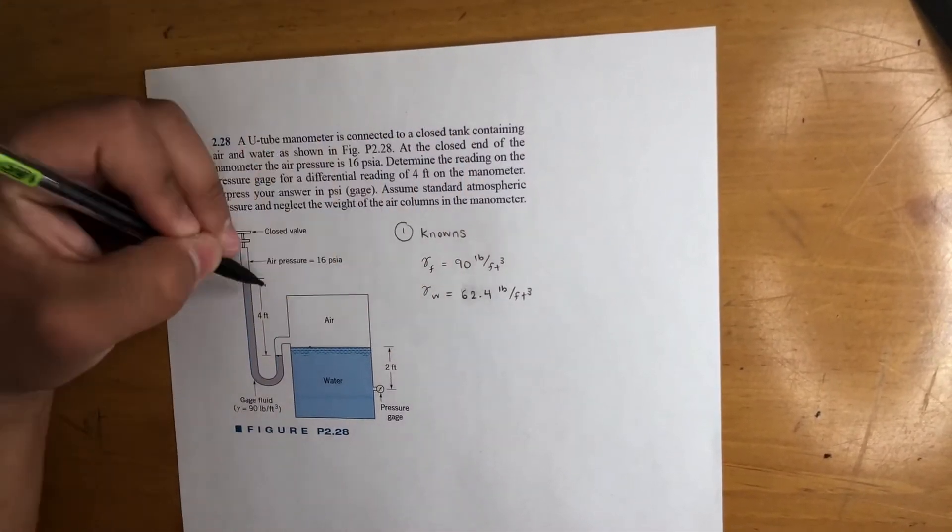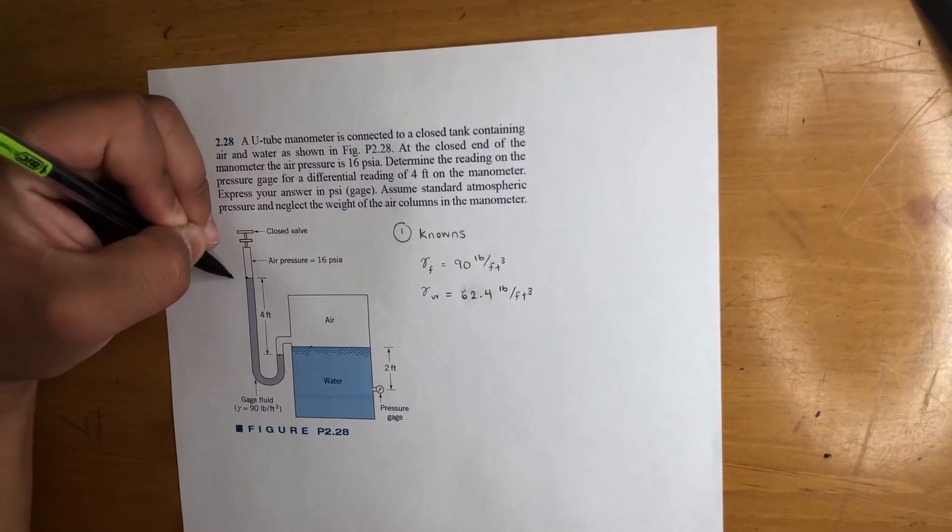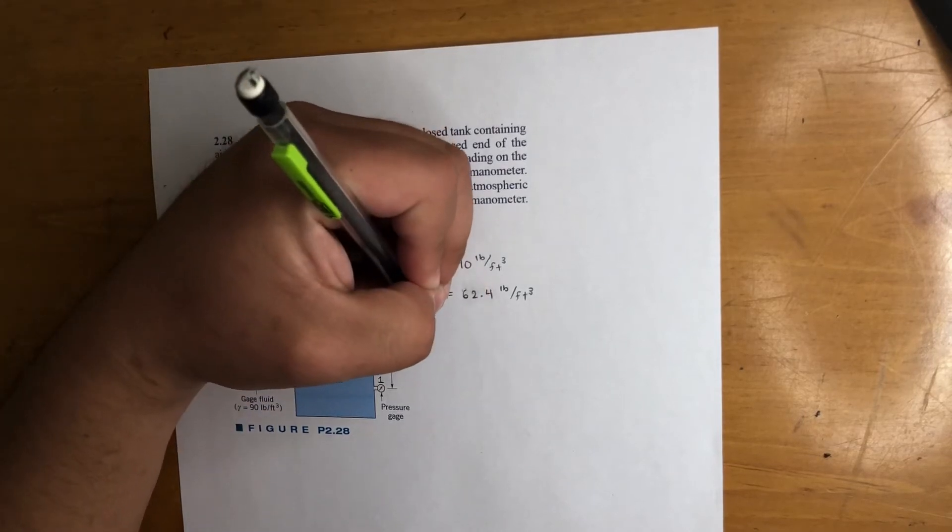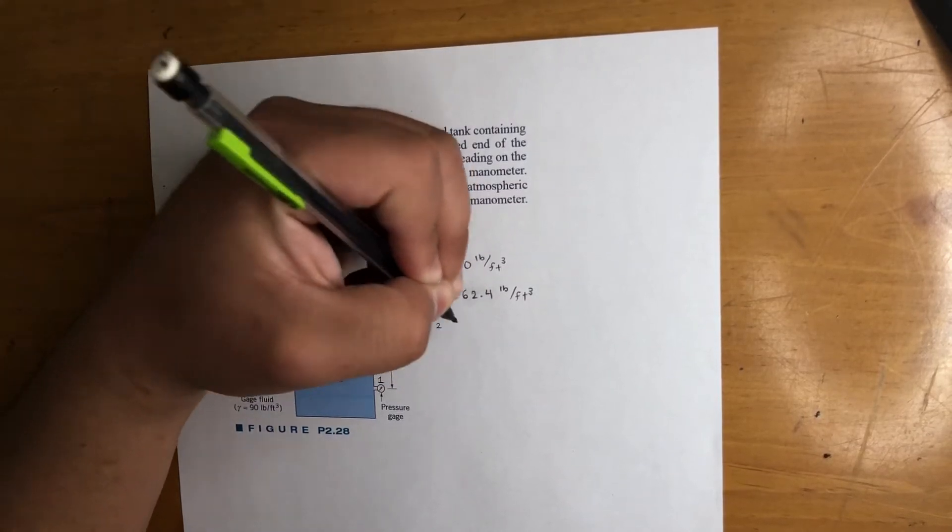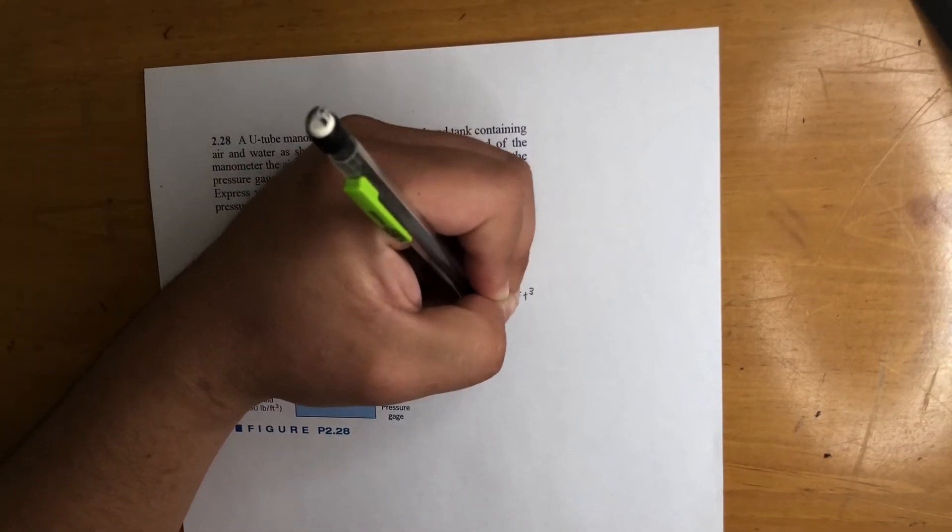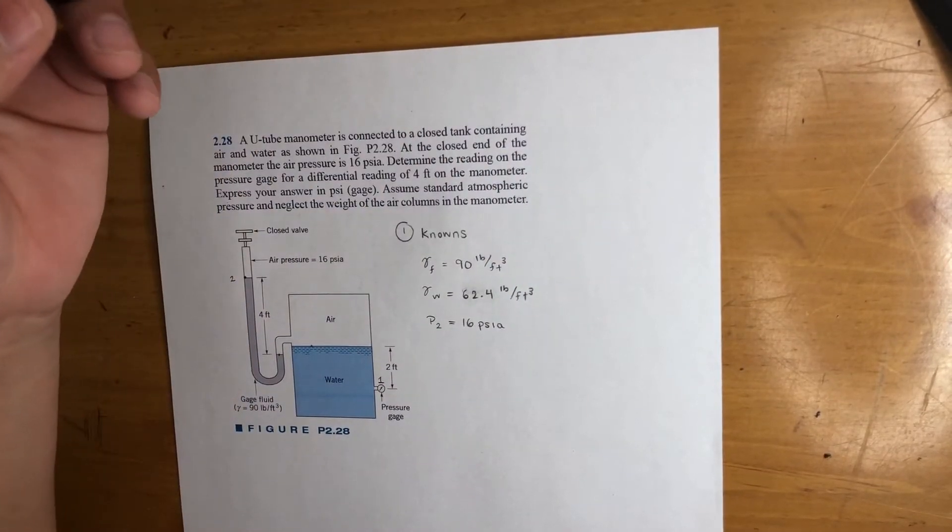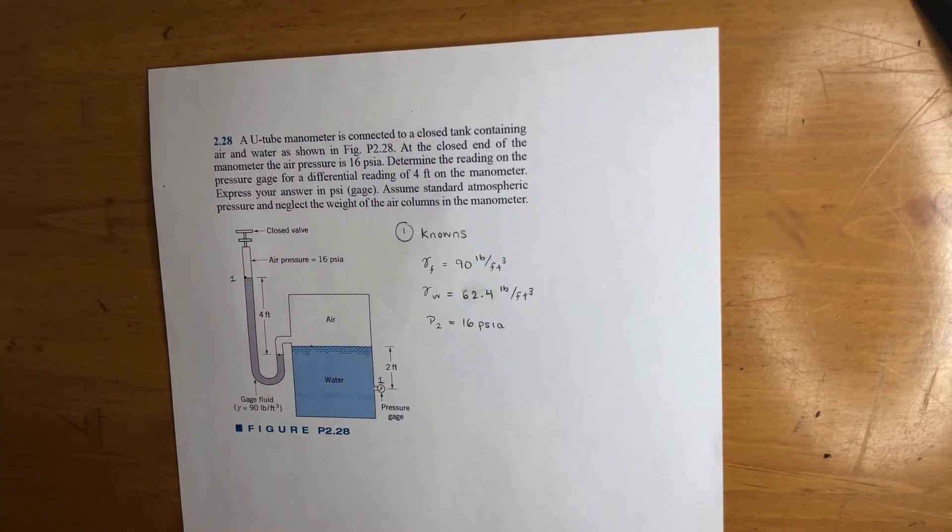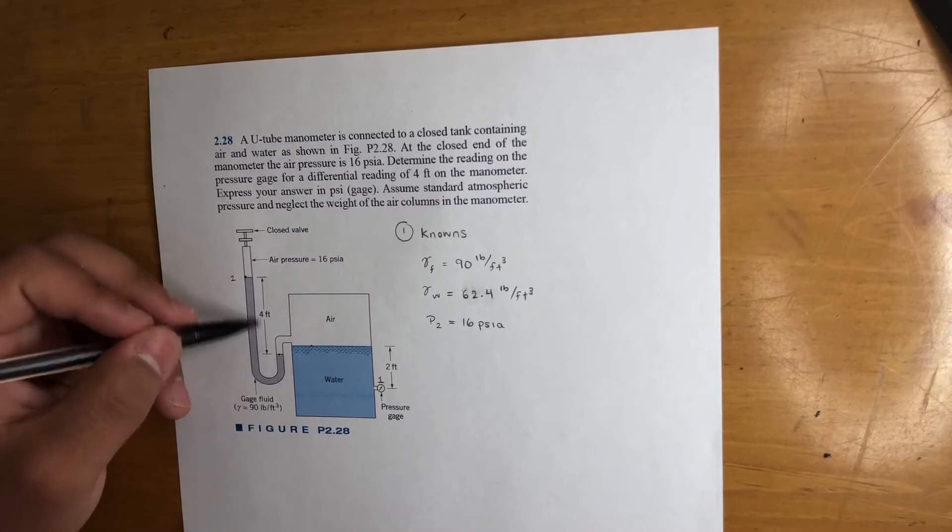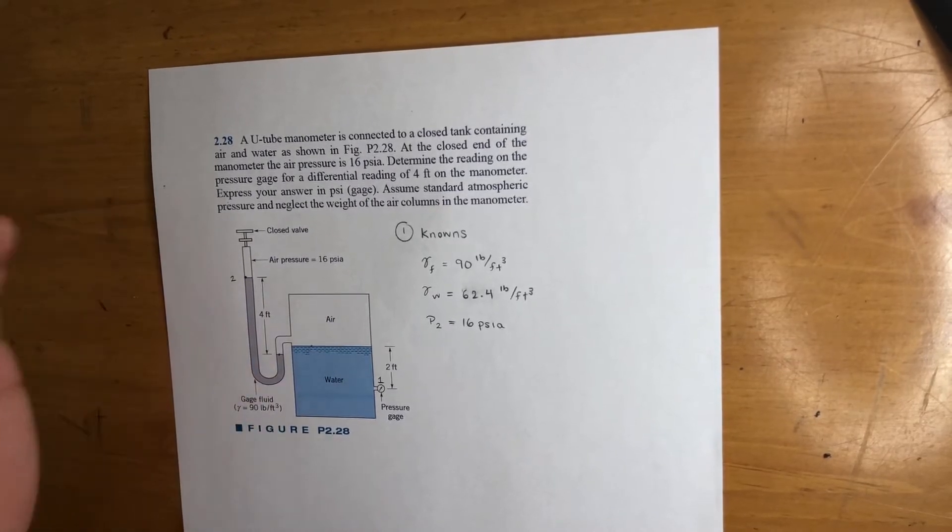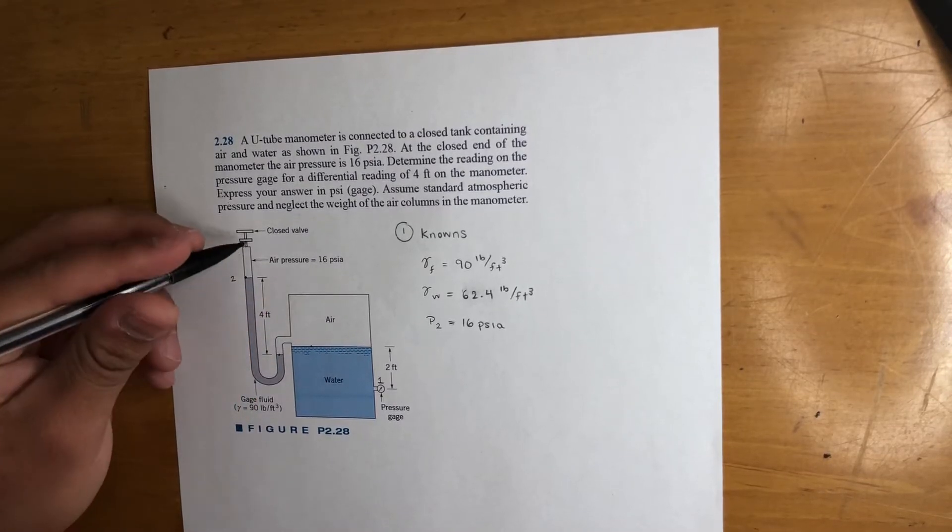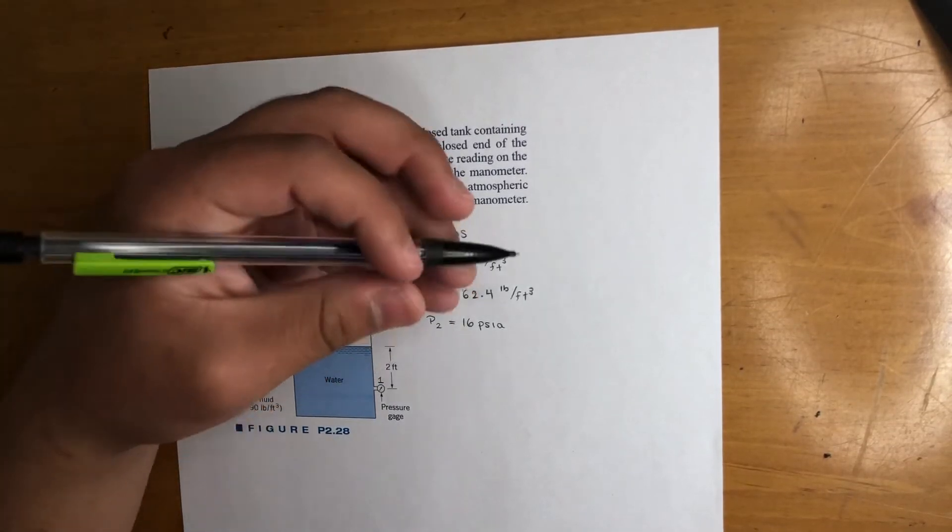We also know the pressure at 2. Let's label this right here point 2, let's label this point 1. Pressure at 2 is 16 psi absolute. So the first step here, we're trying to find this pressure right here, right? We got this pressure, we got this height, got this height, so it should be possible. We know the gamma of water and the fluid, air is negligible, closed valve, we got the pressure there. Cool.